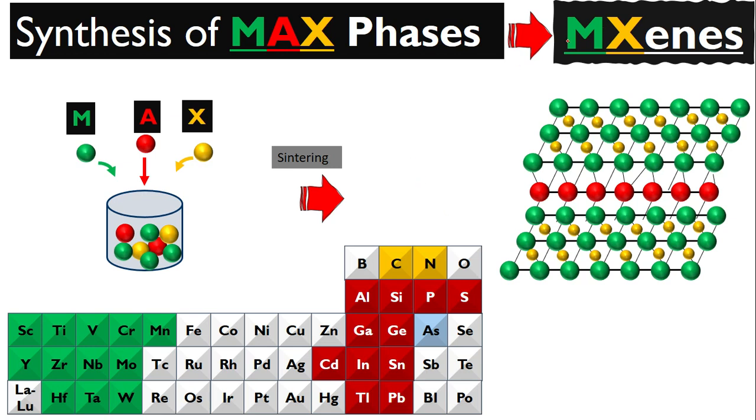As we know, we get MXene structure and material from MAX phases. Let's learn how we synthesize MAX phases. What is M, A, and X? M is transition metals - these are called early transition metals, the initial metals that we call transition metals.